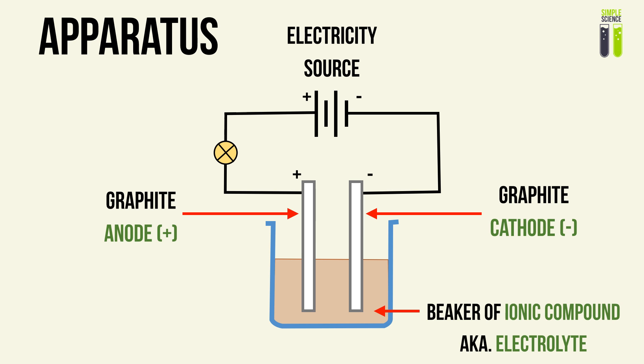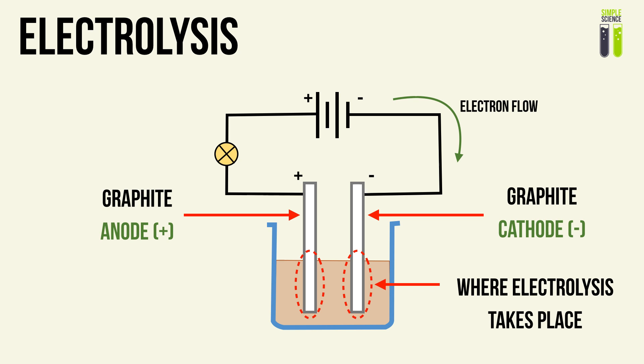In other words, the electrolyte is the liquid that can conduct electricity. Since the negative terminal is on the right and the positive terminal is on the left, the electrons will flow in the clockwise direction. The dotted ovals mark the region where electrolysis will take place — that is, the interface between the liquid or solution and the electrodes.